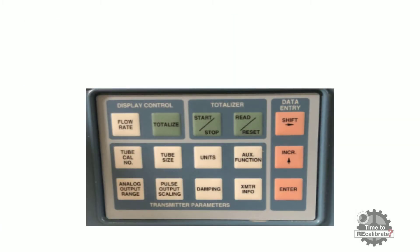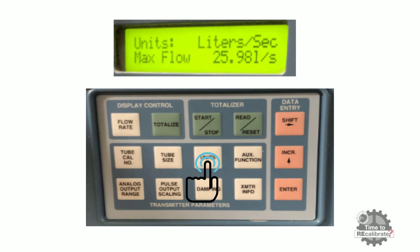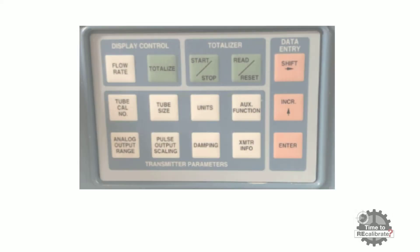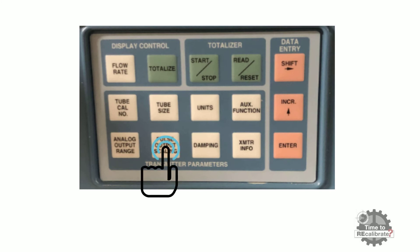In order to check the unit of flow, press the units button. As you can see from the picture, the unit of flow will be displayed on the screen. In addition to this, also check the flow totalizer unit. Now press the pulse output scaling button to check the coil pulse mode of the flowmeter.